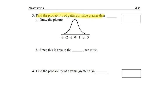So now I'm asked to find the probability of getting a value greater than negative 1.81. We've already done less than negative 1.81, but now we're going to do greater than.